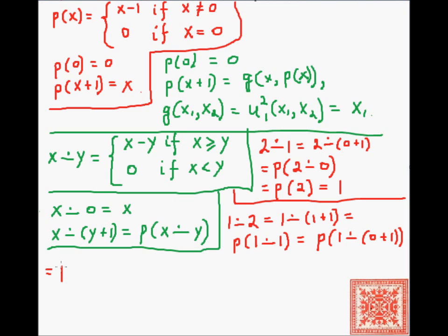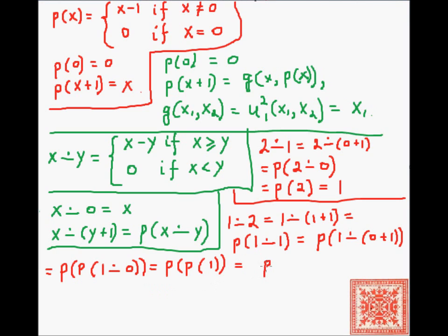Now let's try 1 dot-minus 2. We compute: 1 dot-minus (1+1) = predecessor of (1 dot-minus 1) = predecessor of (predecessor of (1 dot-minus 0)) = predecessor of (predecessor of 1) = predecessor of 0 = 0.